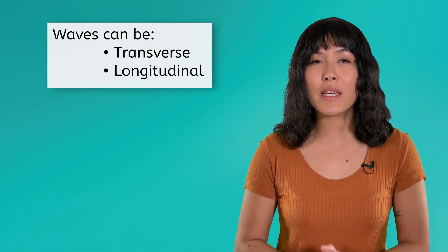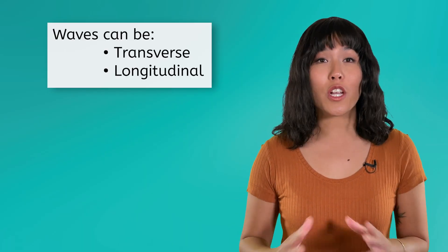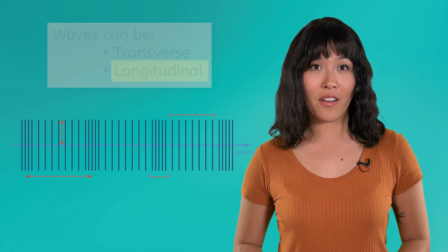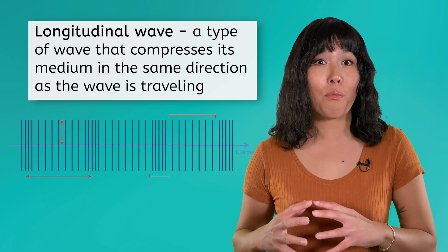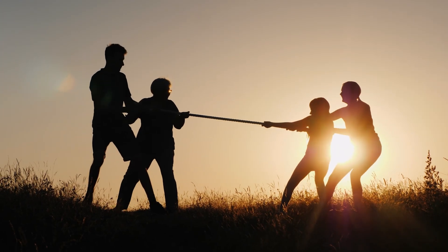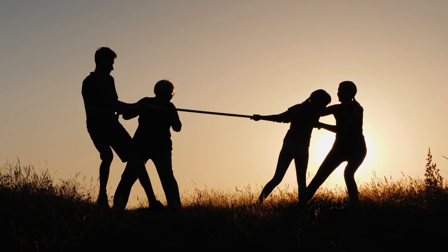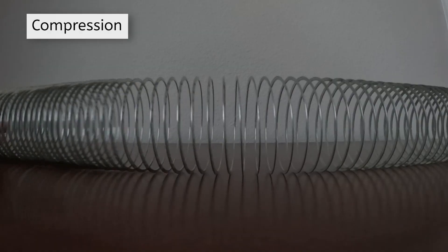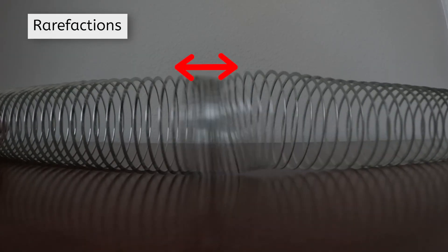We said earlier that waves can be transverse or longitudinal. Now that we know what transverse waves are, let's find out how longitudinal waves differ. Longitudinal waves move through a medium by compressing and expanding the medium in the same direction the wave is traveling. If transverse waves are like the ripples across the surface of a pond, longitudinal waves are like the push and pull you feel in a game of tug of war. One of the easiest ways to visualize longitudinal waves is with a slinky. As the slinky is pushed on one end, a compression forms and quickly moves across to the other side. The stretched out sections in between compressions are called rarefactions. Notice that the compressed coils move back and forth and the waves also propagate back and forth. Unlike in transverse waves, all motion is in the same direction in a longitudinal wave.